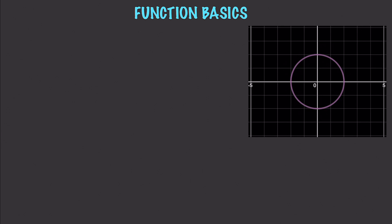For something to be a function, every input has exactly one output. For example, if you had y equal to plus or minus the square root of 4 minus x squared — which you see on the right side of your screen — that is an example of something that is not a function. We have something called the vertical line test: if you can draw a vertical line through your graph and touch more than one point, it is not a function.